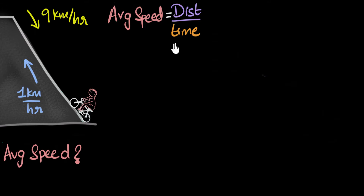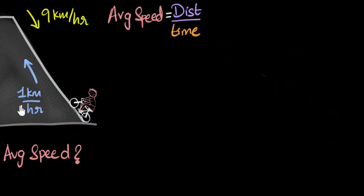Now you can see what the problem is — I don't know either of them. Distance is not mentioned, nor is the time mentioned. All that is given are the speeds of the boy when he's going up and when he's coming back down. So how do we solve this?